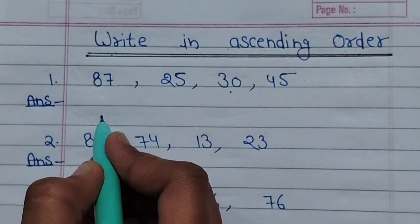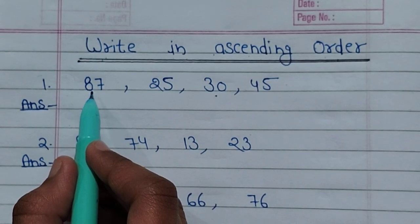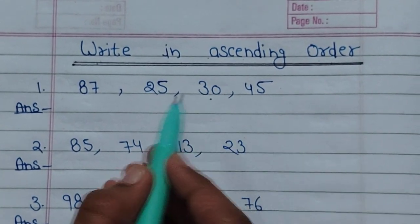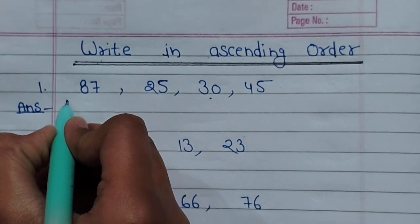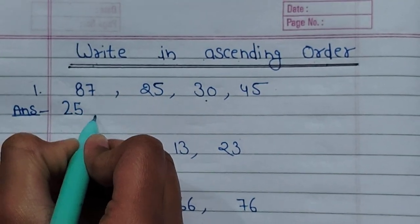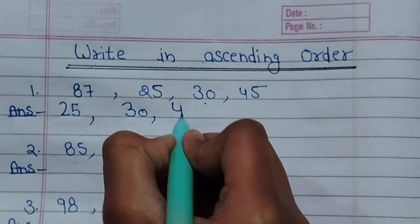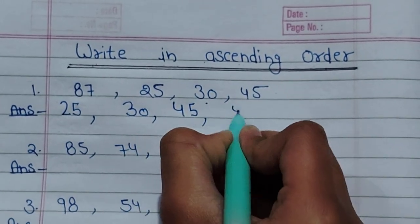So let us take this number: 87, 25, 30, 45. In ascending order: 25, 30, 45, 87.